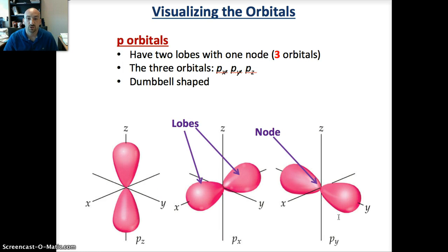The P orbital has two lobes with one node. It has a total of three orbitals: PX, PY, and PZ. That's basically just on what axes these P orbitals exist. Each of these have one node, which is where they intersect in the middle, and they have two lobes. You can think of this as two balloons that are attached together and sticking out. The probability the electron exists in this region or this region. These are all dumbbell shaped.